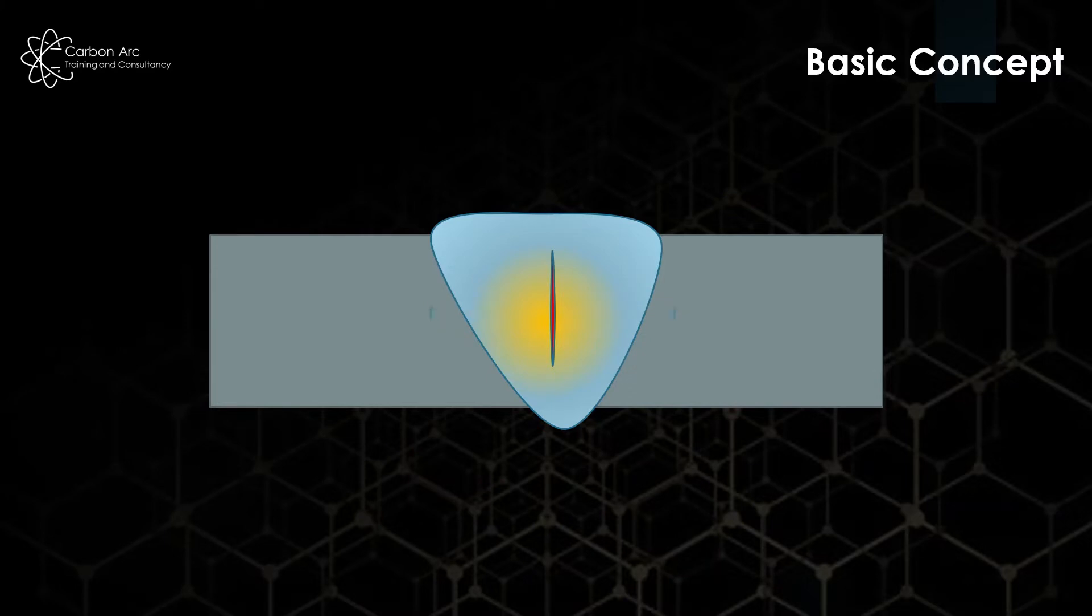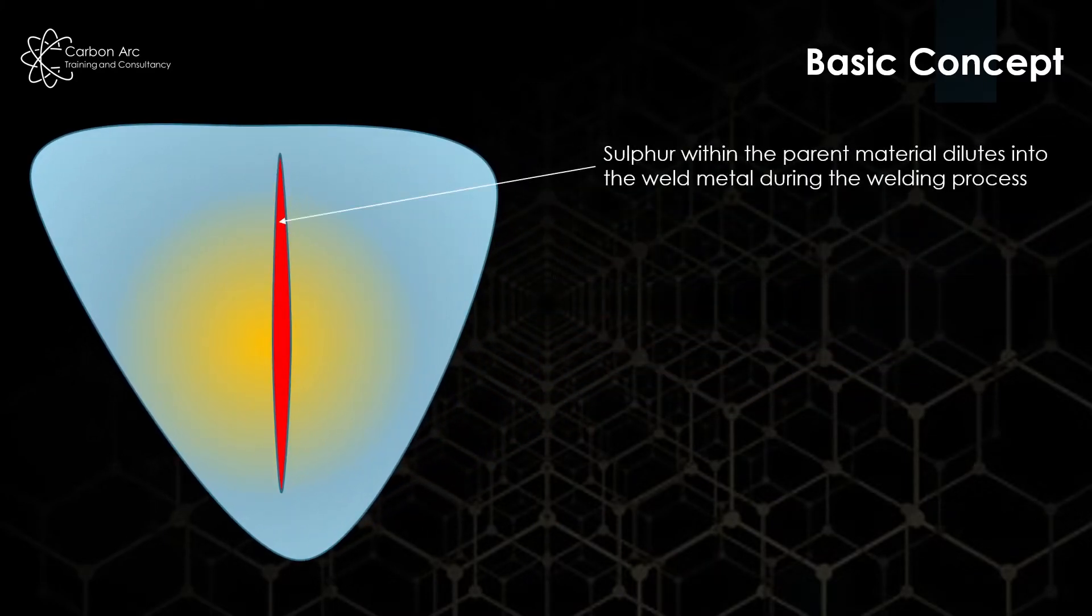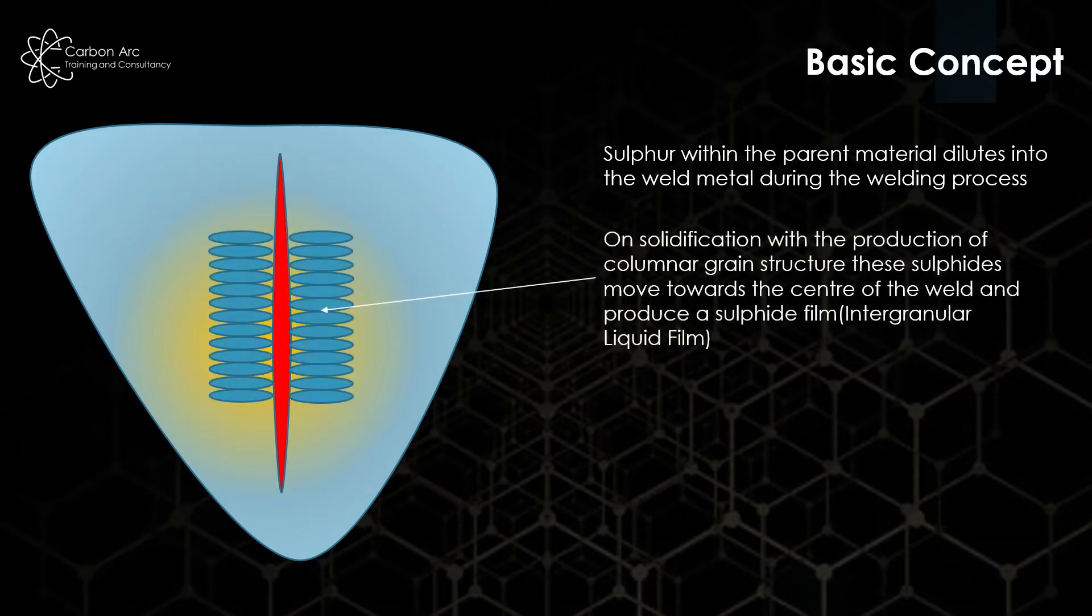When we're talking about solidification cracking, what we'll see here is sulfides from normally contamination within the base material get diluted and be forced to the center of our weld. This then creates a film down the center of the weld where a column of grain growth builds up alongside of it, and what we have here is the grains aren't able to lock together because we've got this sulfide film.